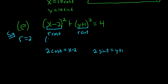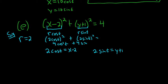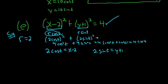Why does this work? If you substitute 2 cosine t and 2 sine t and square them, you get 4 cosine squared t plus 4 sine squared t. Factor out the 4 to get 4 times (cosine squared t plus sine squared t), which equals 4 times 1, which is 4. It checks out! So setting those expressions equal always works.